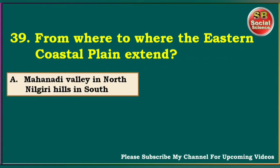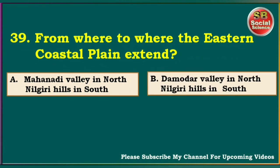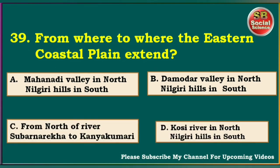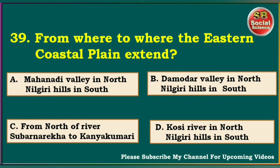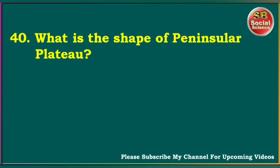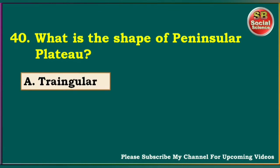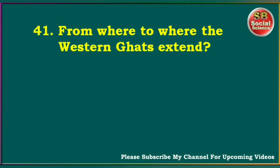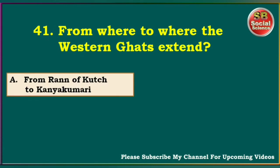From where to where does the Eastern Coastal Plain extend? Mahanadi Valley in North to Nilgiri Hills in South, Damodar Valley in North to Nilgiri Hills in South, from North of River Subarnarekha to Kanyakumari, Kosi River in North to Nilgiri Hills in South. The answer is from North of River Subarnarekha to Kanyakumari. What is the shape of the Peninsular Plateau? Triangular, rectangle, circle, square. The answer is triangular.